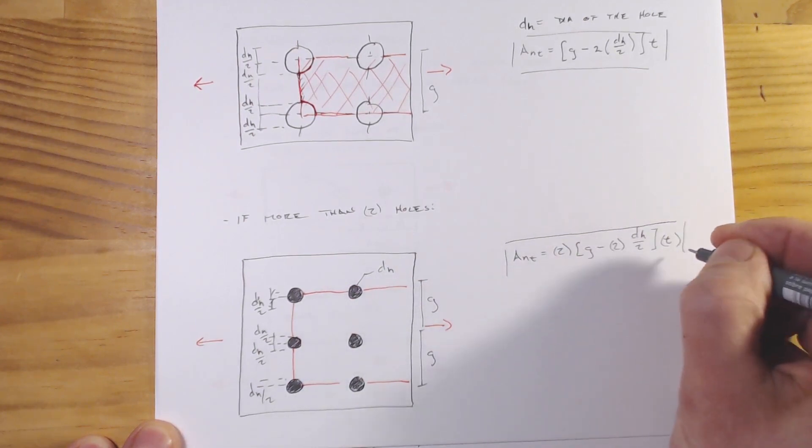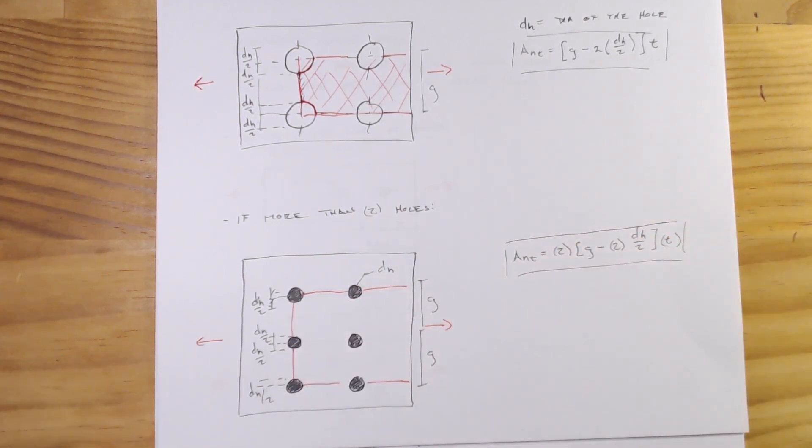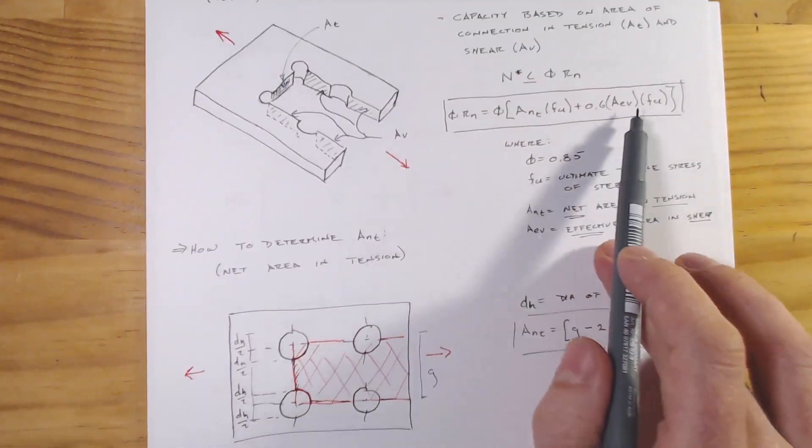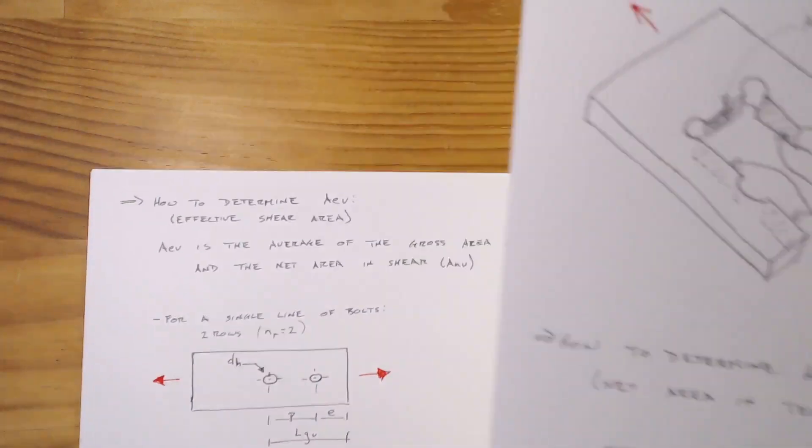So I hope that what we showed there for the net tension area should be pretty straightforward, mostly because it's similar to what we've done before. Now, what might be a little bit more confusing is when we start looking at this effective shear area.